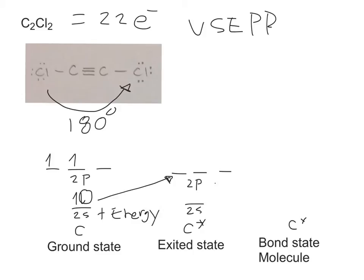Which would give us one unpaired electron on the 2s subshell and three unpaired electrons in the 2p.